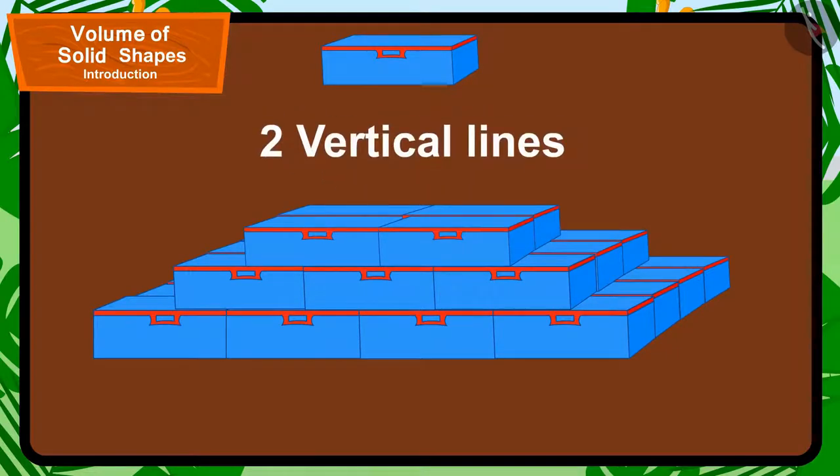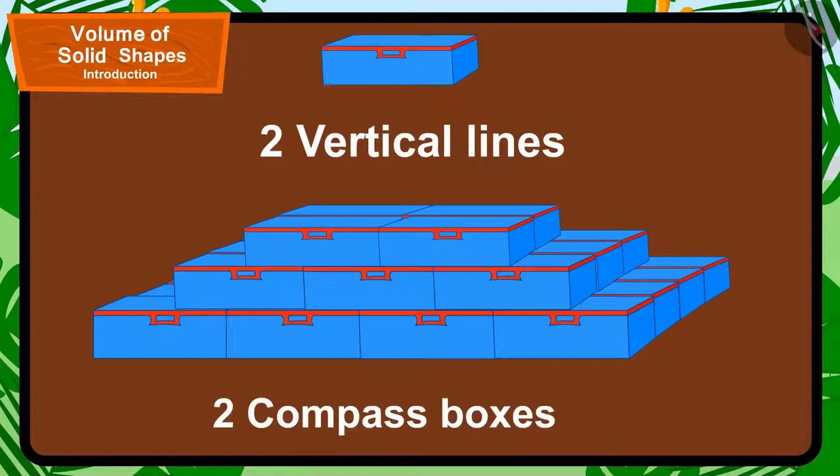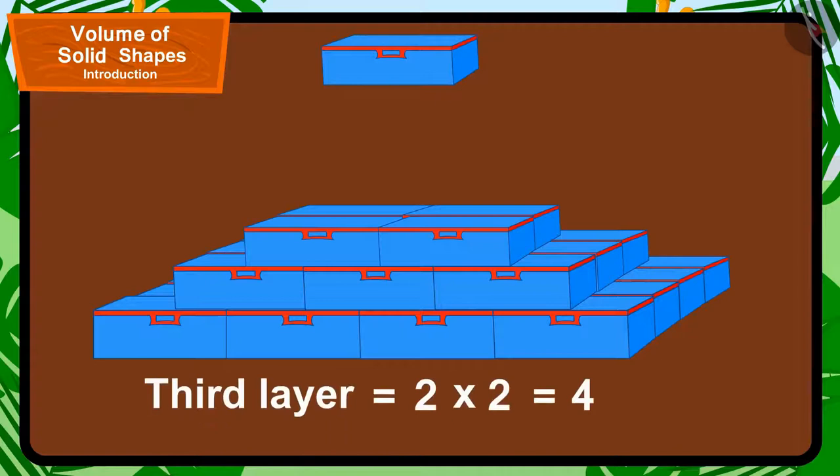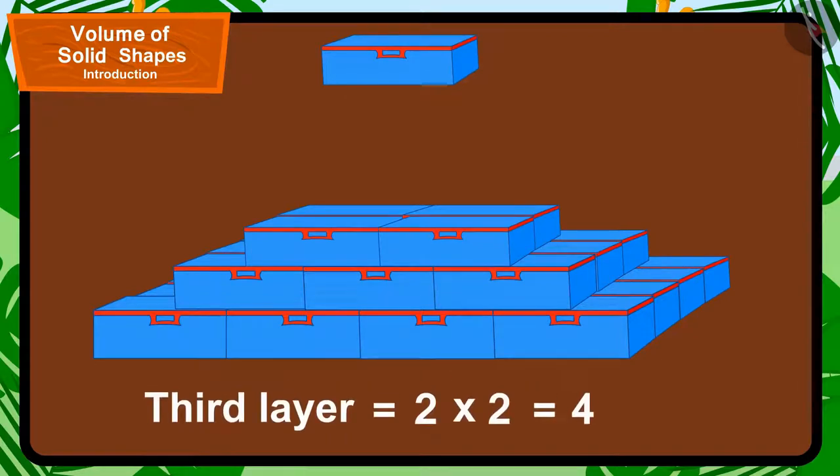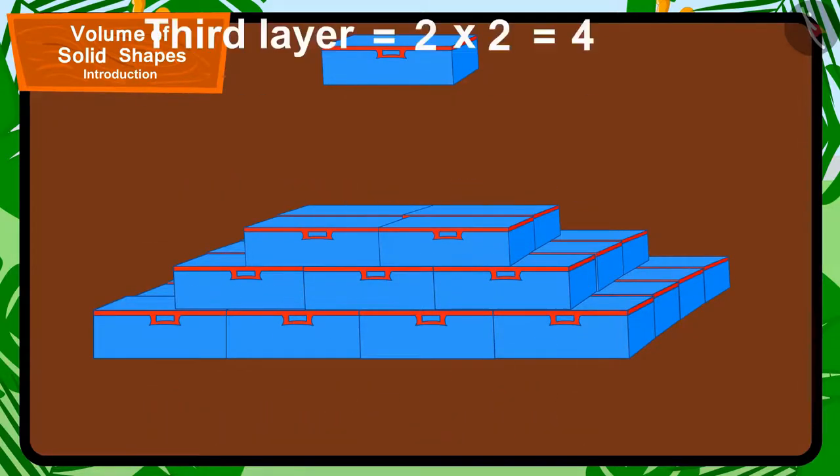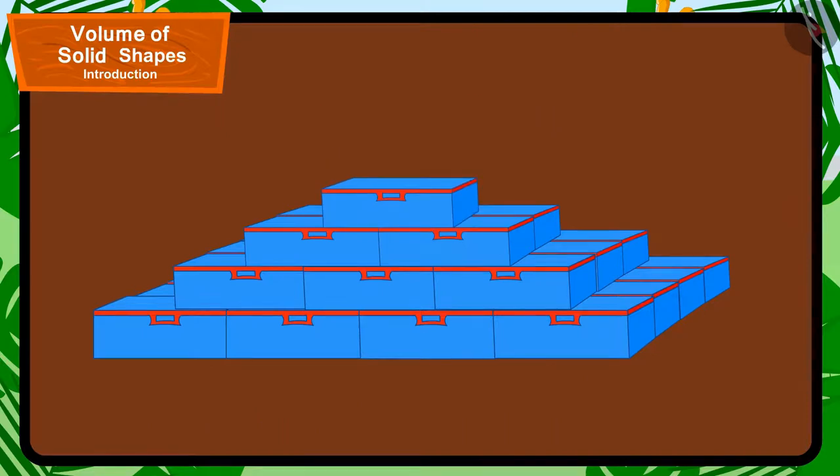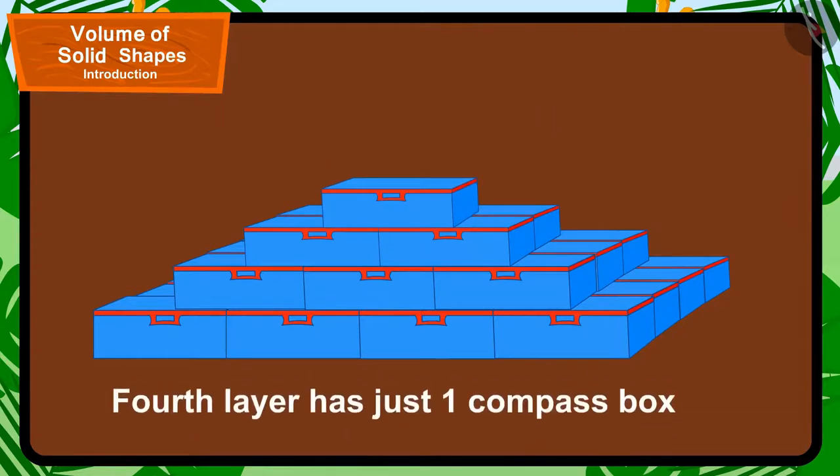The third layer has 4 compass boxes. And finally, the fourth layer has just one compass box.